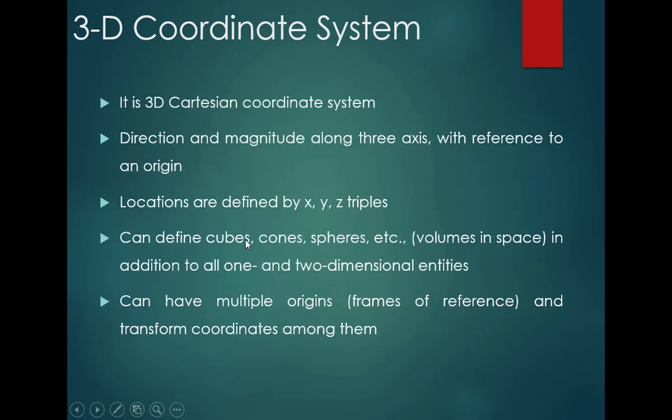In 3D, it is the 3D Cartesian coordinate system — direction and magnitude along the three axes with reference to the origin. The three axes are x, y, and z triples. We can define cubes, quads, and spheres. If we can define them, we utilize three coordinates.